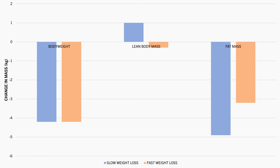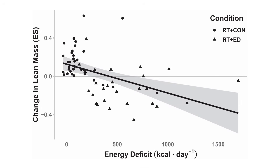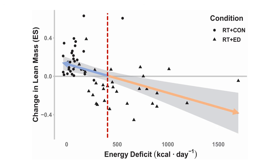Furthermore, this meta-regression aimed to analyze the influence of the magnitude of a calorie deficit on changes in lean mass while performing resistance training. It was found that when entering a deficit of more than around 500 calories per day, lean mass losses are typically observed. Although with deficits of less than 500 calories, we often experience no losses or even small gains in lean mass when resistance training is being performed.